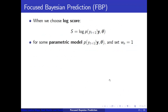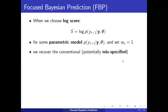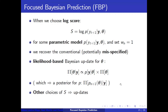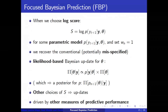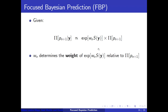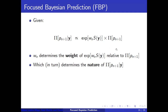If we choose the log score for a parametric model indexed by theta and set the scale equal to one, we recover the potentially misspecified conventional likelihood-based update for the parameters of that parametric predictive, from which we extract a posterior over the predictives themselves. Other choices of scoring rule lead to updates driven by other measures of predictive performance — and that's the whole point of the exercise. The scaling factor W determines the relative weight of the sample-based criterion to the prior, and therefore impacts the resultant posterior — including its variance critically. So we have to choose something sensible.